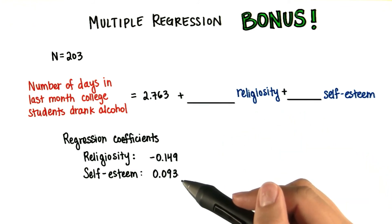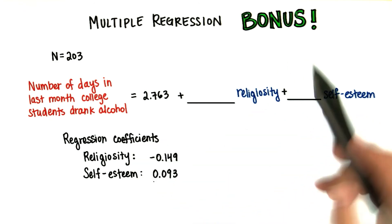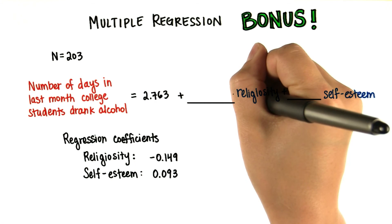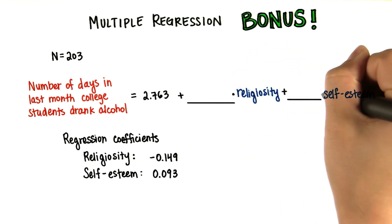Here are the regression coefficients that he got. Based on these, fill in the blanks. Each of these blanks are numbers multiplied by the variable.